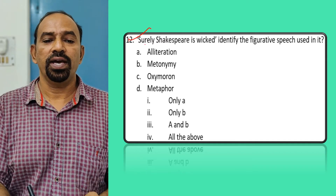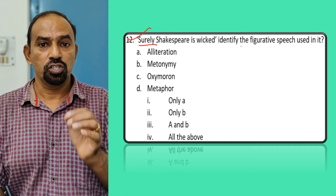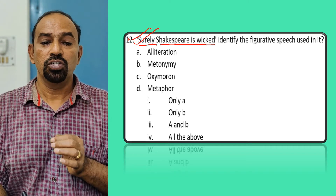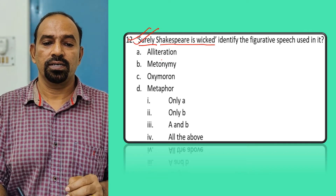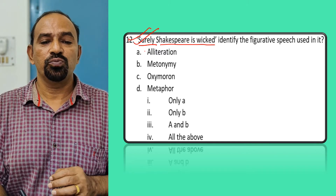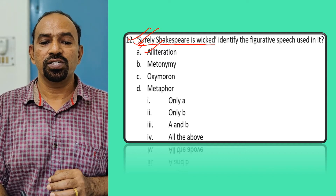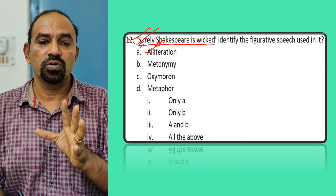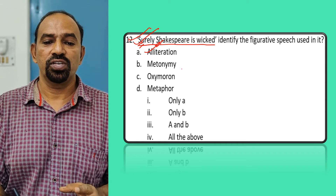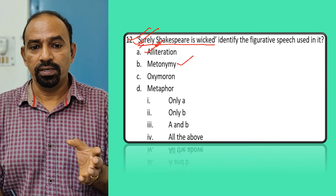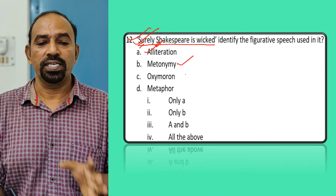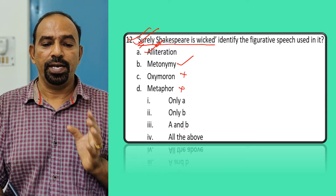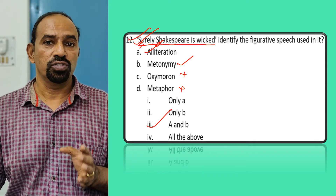Question twelve: 'Surely Shakespeare is wicked'. We added the word 'surely'. In 'surely Shakespeare is wicked', alliteration is present because the consonant S is repeated in at least two consecutive words. Metonymy is also present, as already discussed. Oxymoron and metaphor do not apply. So A and B — alliteration and metonymy — are correct. The third option is right.